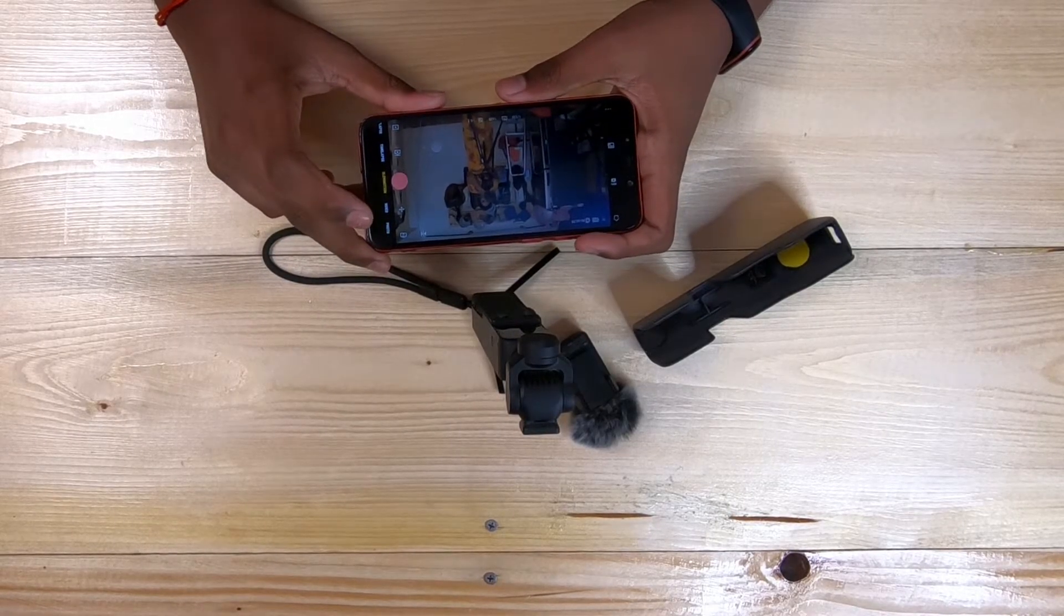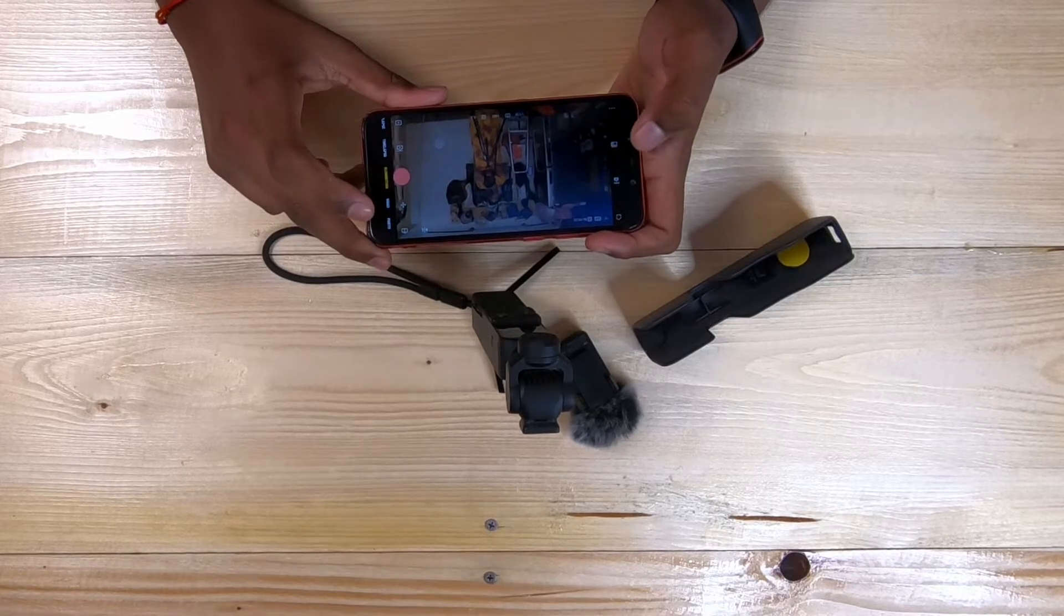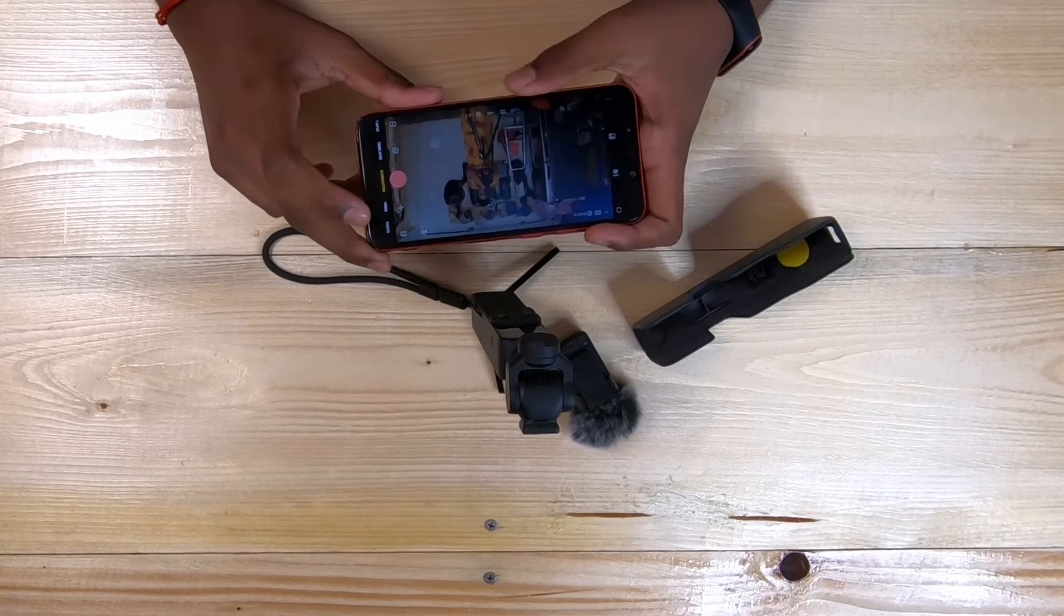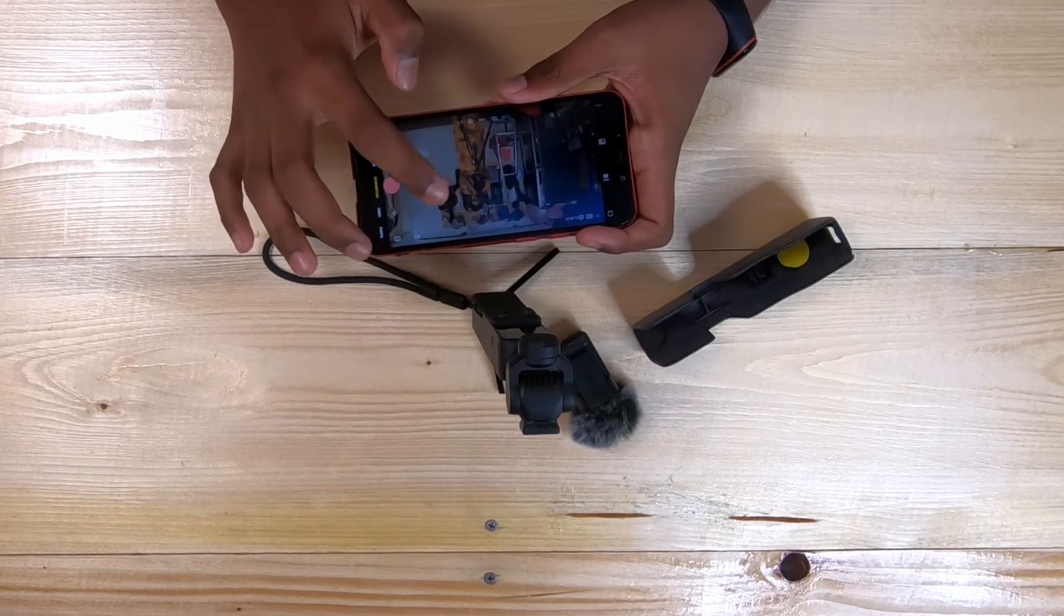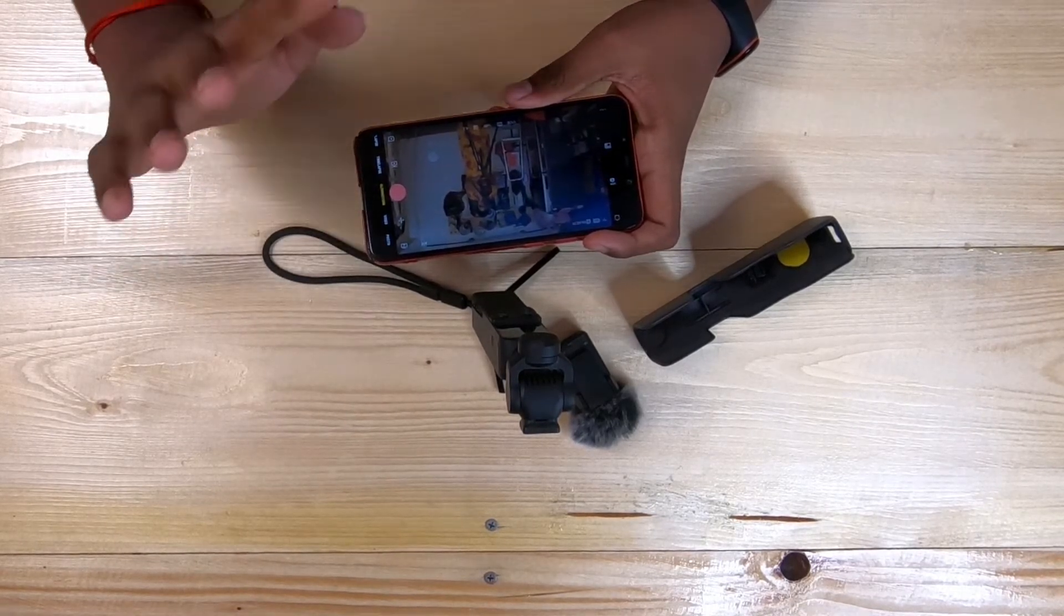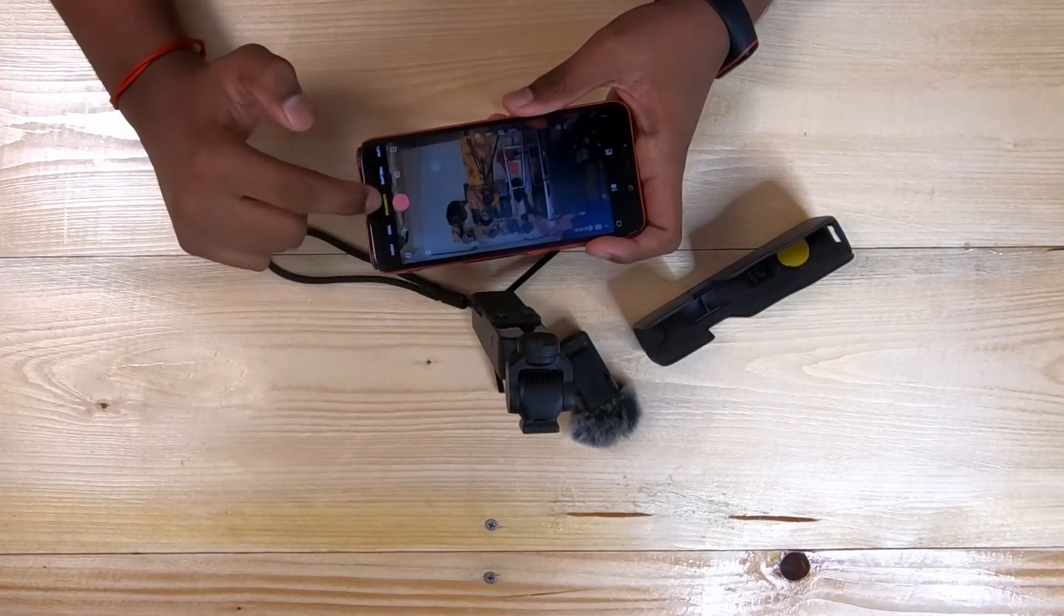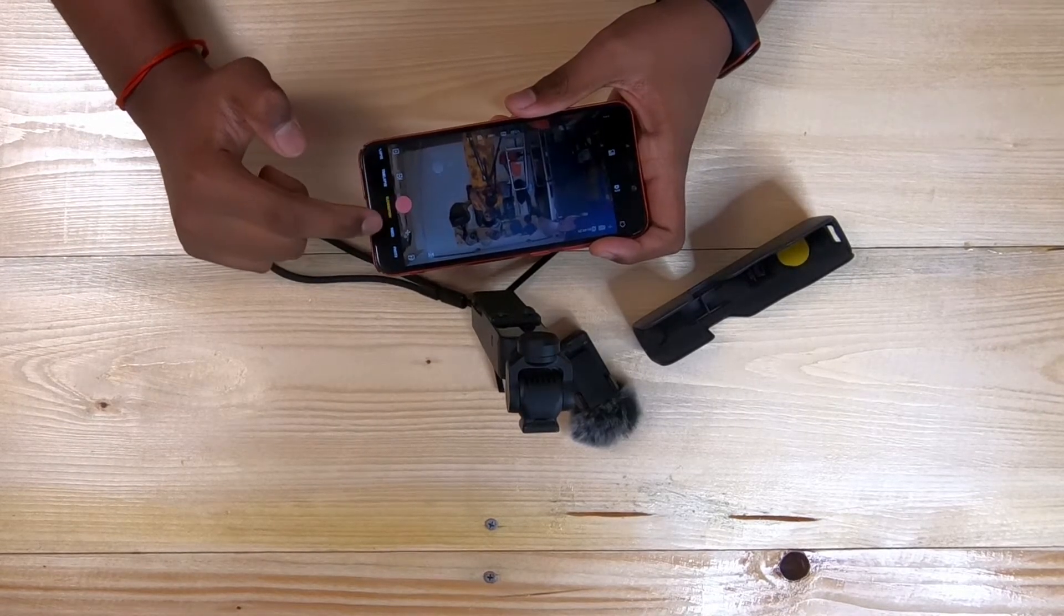So, the slow motion will be in 4X speed, which is also changeable. So, you just click here. Actually, slow motion is not changeable. It's only in 1080p and 4X speed. So, that's all about slow-mo.